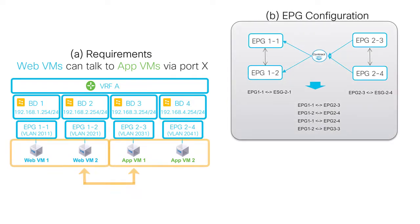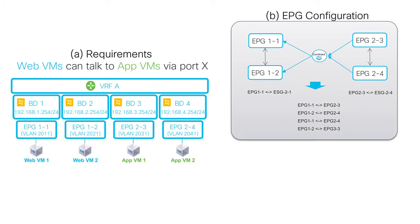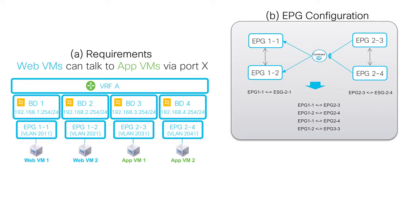If you need to allow web to talk to app using EPGs, you would need at least four contracts. If you also need to allow free communication between web servers, you need an extra contract between EPG 1.1 and 1.2 and another between EPG 2.3 and 2.4 — so we're talking about six contracts total.